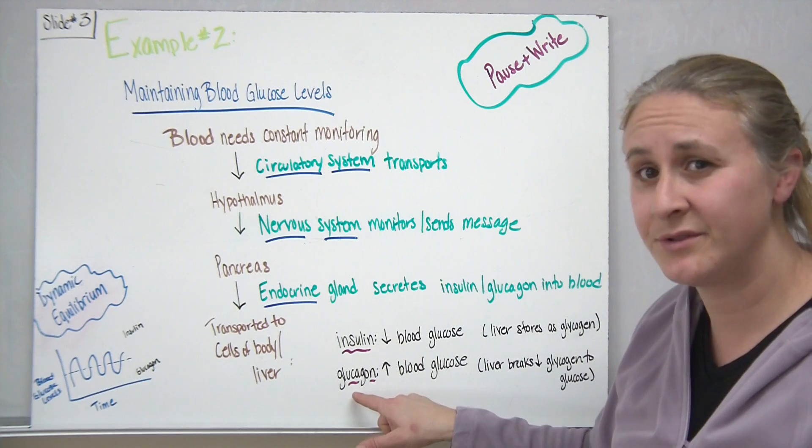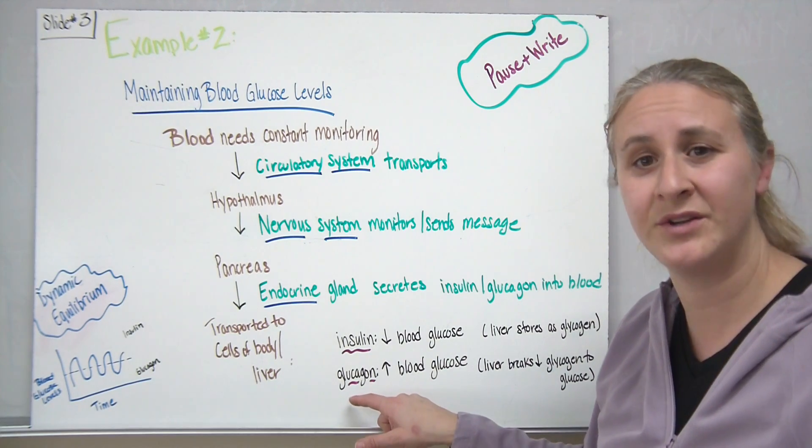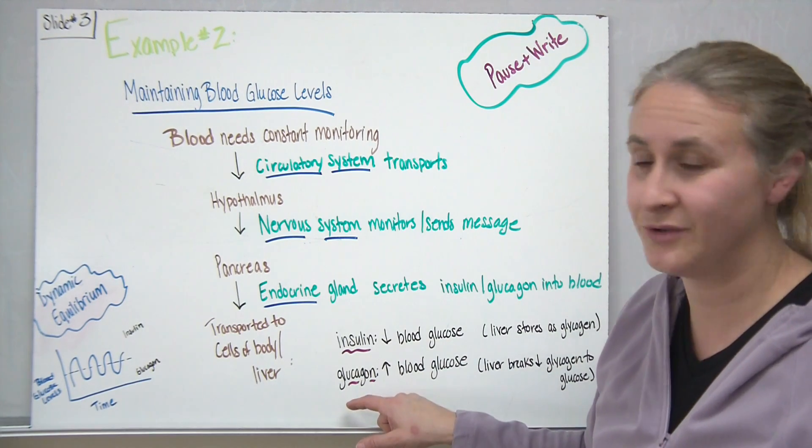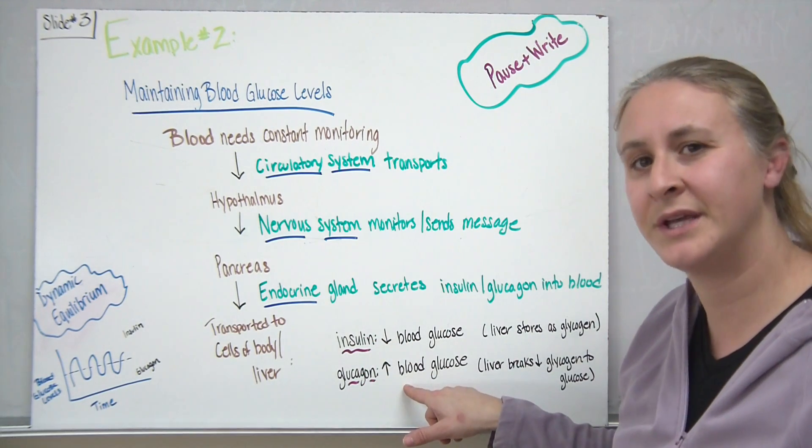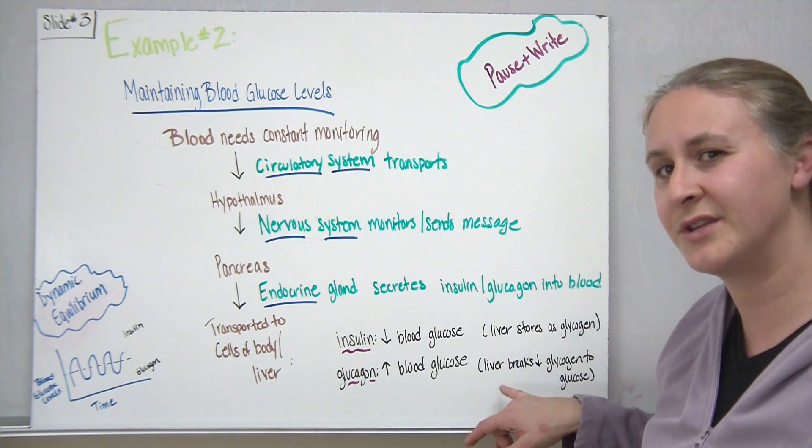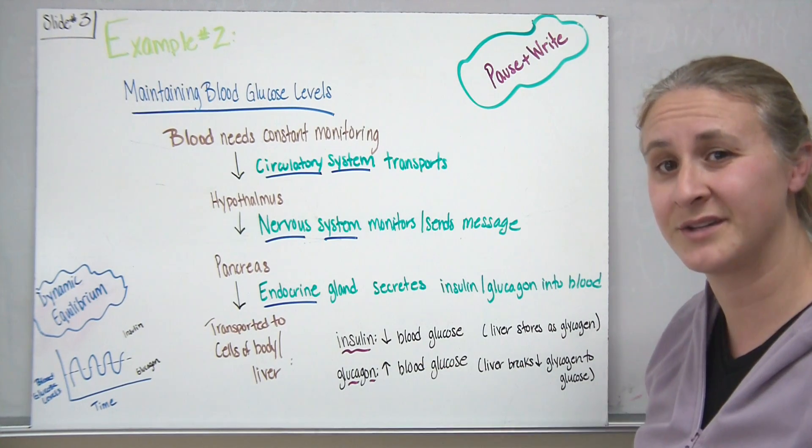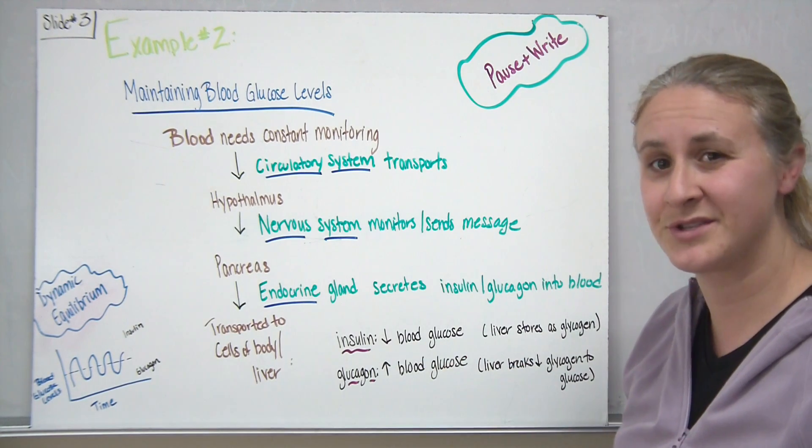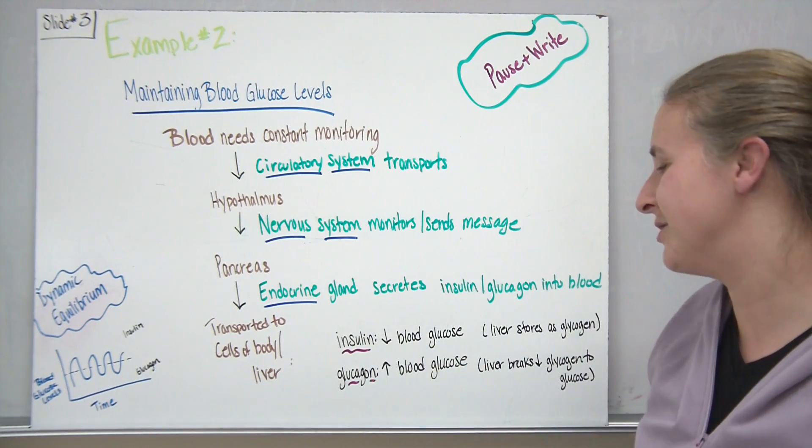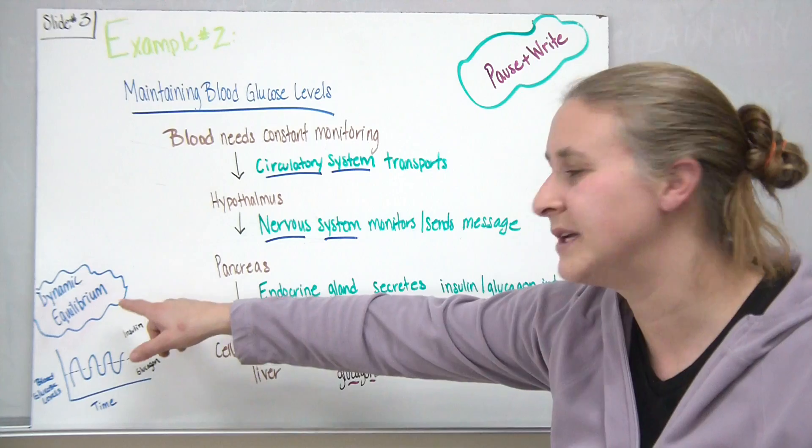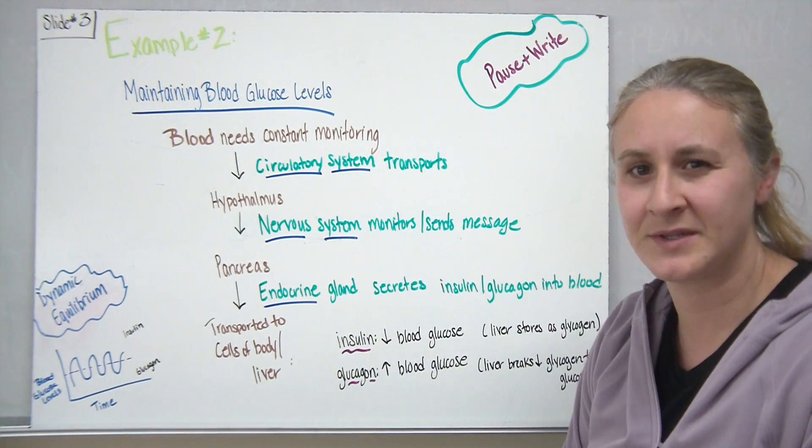If your blood sugar levels are too low, let's say you woke up in the morning and you didn't eat breakfast today, which many of you do. Your body would release glucagon in order to increase blood glucose levels. So the liver is actually going to take some of that stored glycogen and put it into the bloodstream in order for it to be broken down and used for energy in the form of glucose. So when we talk about maintaining homeostasis, we use this term called dynamic equilibrium.